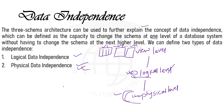For logical data independence: if there is a change at the logical level, it should not affect the design of the view level. Changes can include changes in constraints, rules, or adding new data items, modifying or deleting data items. Changes at the physical level do not affect the application program, but changes at the logical level do affect the application program — therefore, changes to the logical level are much stricter than changes to the physical level.